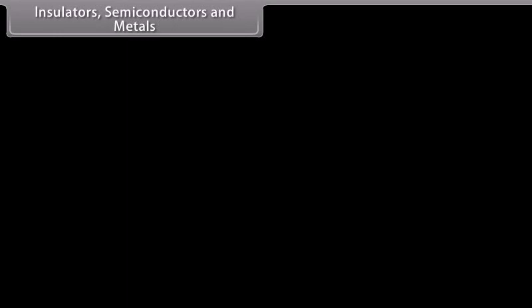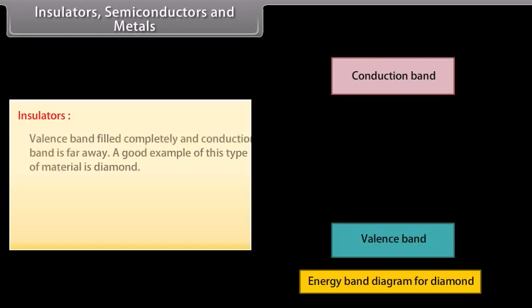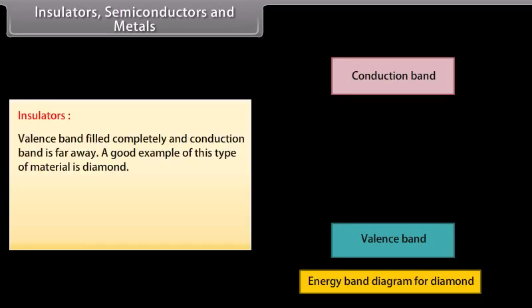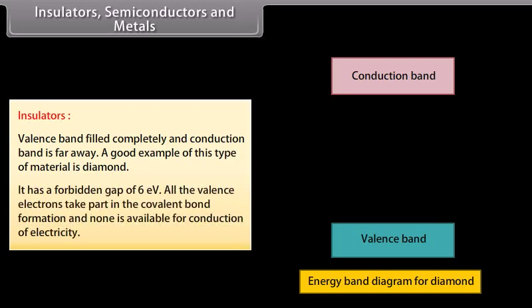Insulators, semiconductors, and metals. On the basis of band theory of solids, the solids are classified as insulators, semiconductors, and metals. Insulators have a completely filled valence band and the conduction band is far away. A good example is diamond, which has a forbidden gap of 6 electron volts. All the valence electrons take part in covalent bond formation and none is available for conduction of electricity.